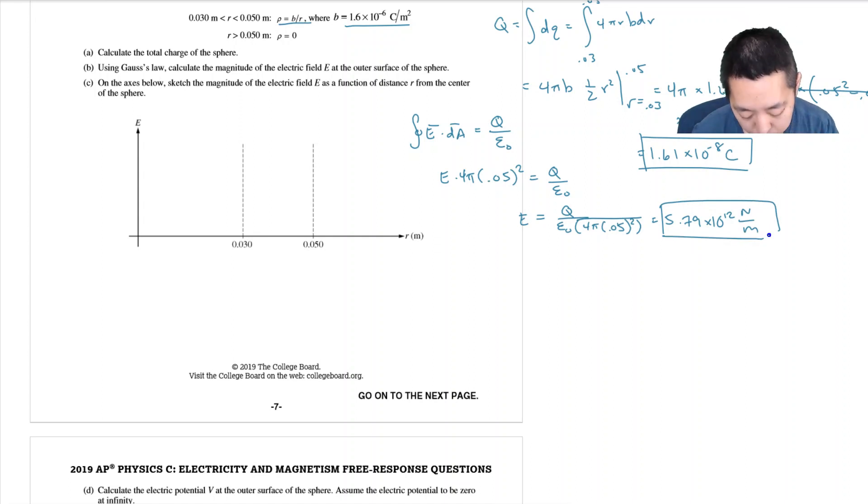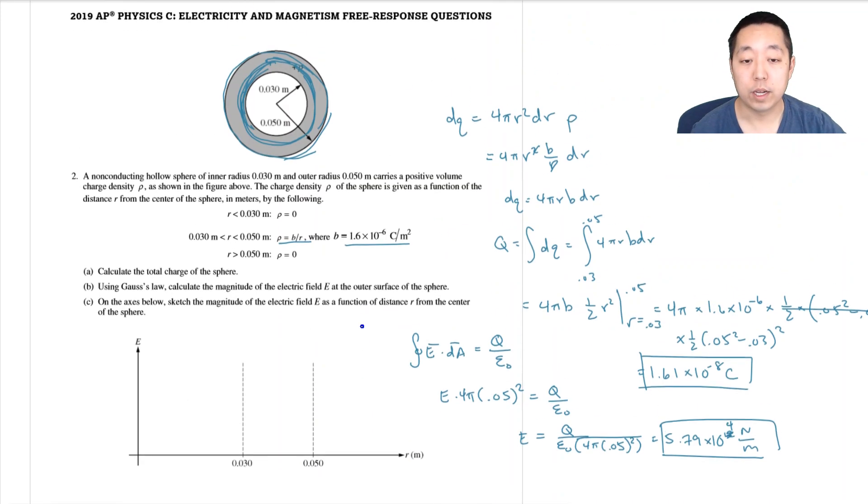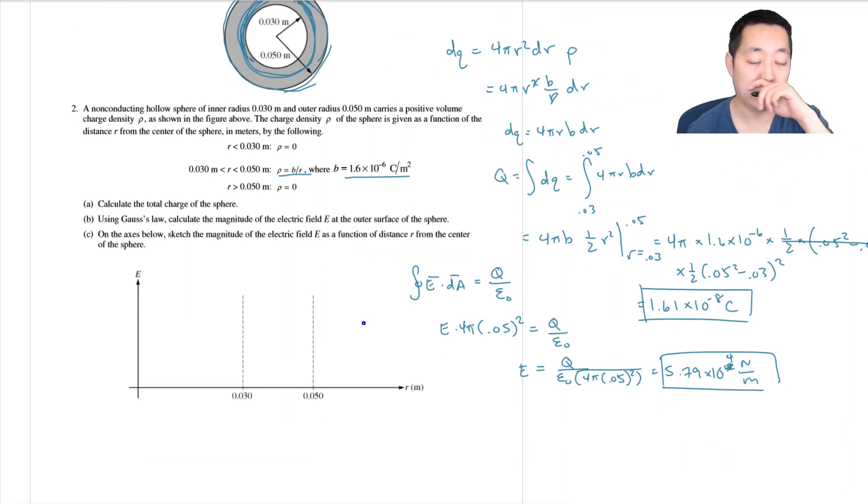Newtons per meter. Wait. 10 to the 12. No. That's not 10 to the 12. I think I forgot to do the 1 E minus 8. I forgot to do the E minus 8. So I got 5.79 times 10 to the 4th. Sorry. Sorry about that. I plugged, that's a calculator mistake on that. I was like, yeah.